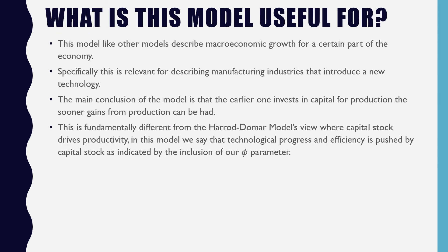If phi is greater than 1, then we have explosive growth. This model, like other models, describes macroeconomic growth — specifically it is relevant for manufacturing industries that introduce a new technology, though it could describe other parts of the economy as well. The main conclusion is that the earlier one invests in capital for production, the sooner gains from production can be had. This is fundamentally different from the Harrod-Domar model's view: here, technological progress and efficiency are driven by the capital stock, as indicated by the theta parameter. That's the learning by doing model — see you in another video!